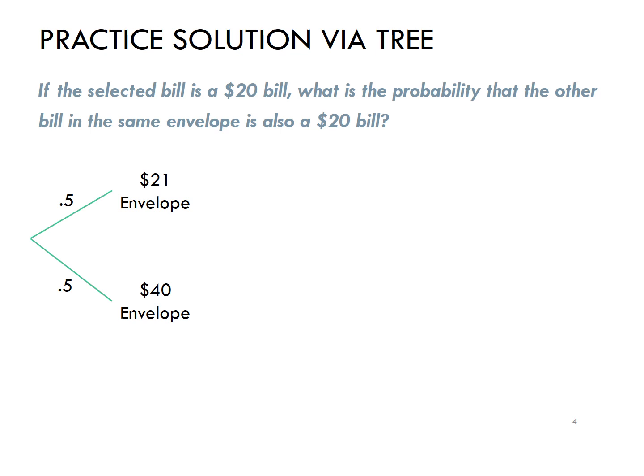Then, if I've conditioned on selecting the $21 envelope, there's a 50-50 chance of either selecting the $20 bill or the $1 bill. If, however, I've selected the $40 envelope, I will always select the $20 bill, and I will never select the $1.